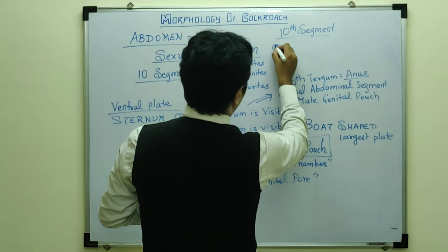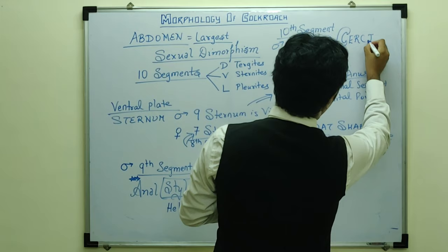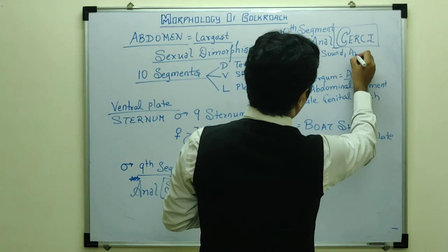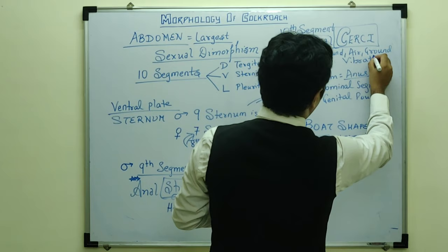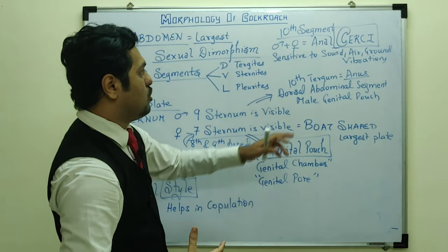In both male and female cockroaches, at the 10th segment there are structures called anal cerci (singular: cercus). Anal cerci are sensitive to sound vibrations, air vibrations, and ground vibrations. They are highly sensitive, which is why when there is a disturbance from the posterior side, the cockroach detects it and starts to run fast — making it a cursorial fast runner. Anal cerci are sensory organs.